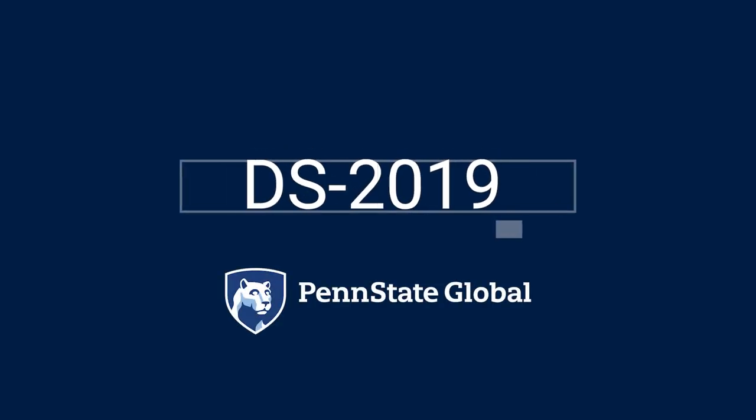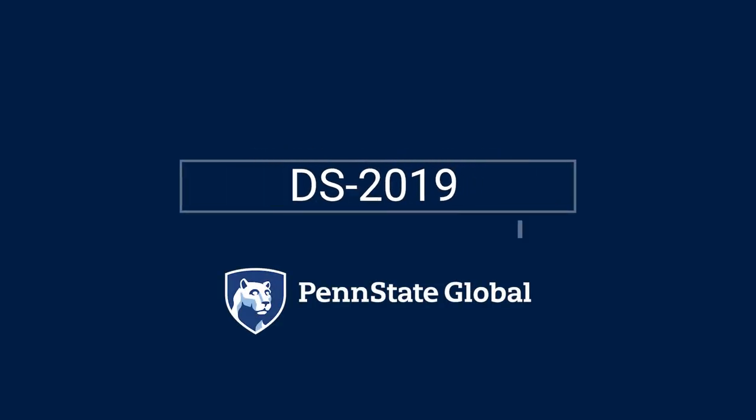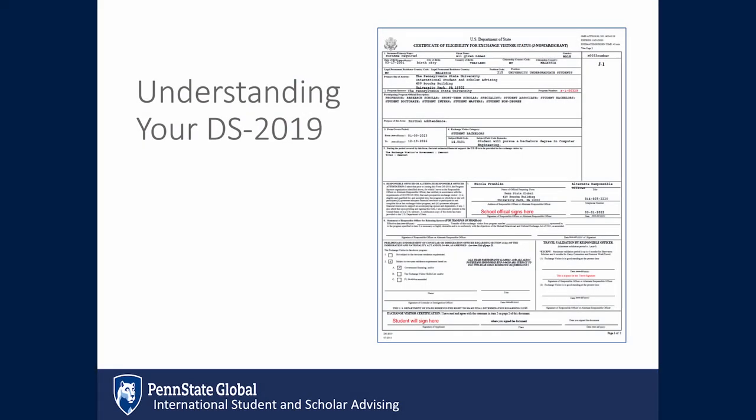Let's walk through the DS-2019. It is important for you to understand the different fields listed on your DS-2019, or Certificate of Eligibility for J-1 Visa.